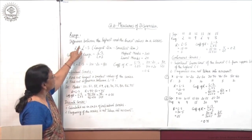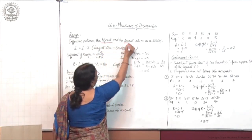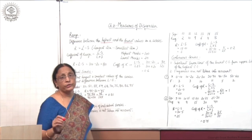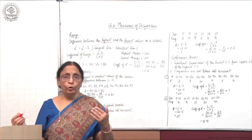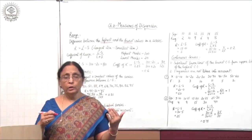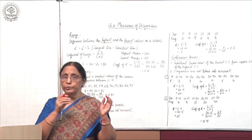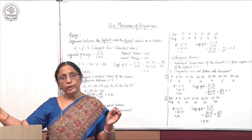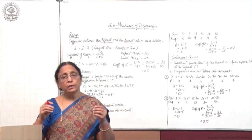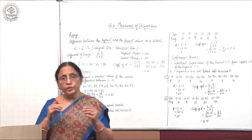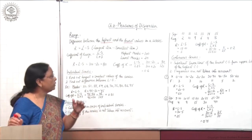What is range? It is the difference between the highest and lowest value in the series. Whenever a series is given, you find the highest value and the lowest value. The data is ranging from the lowest value to the highest value — that is the range.